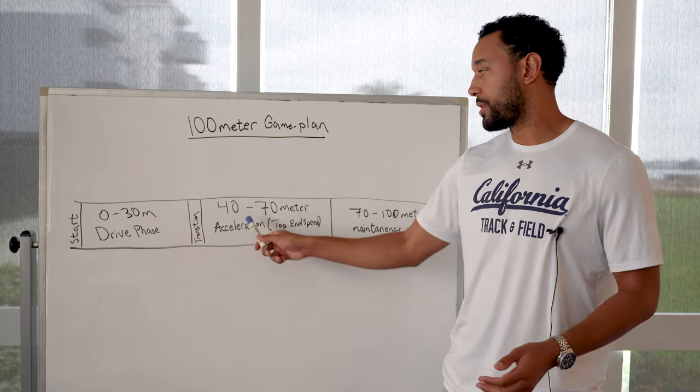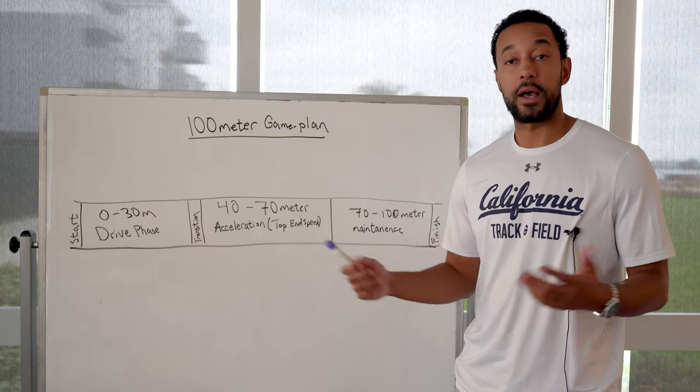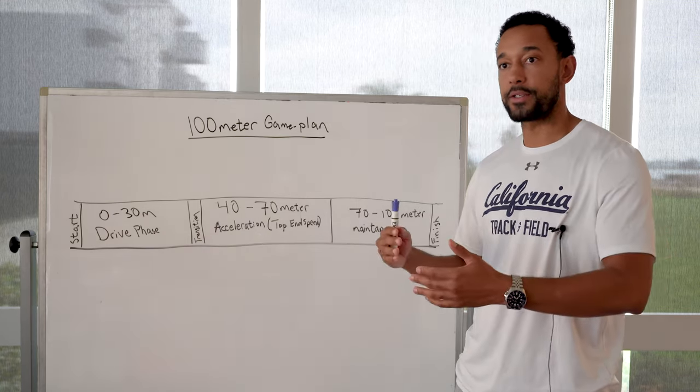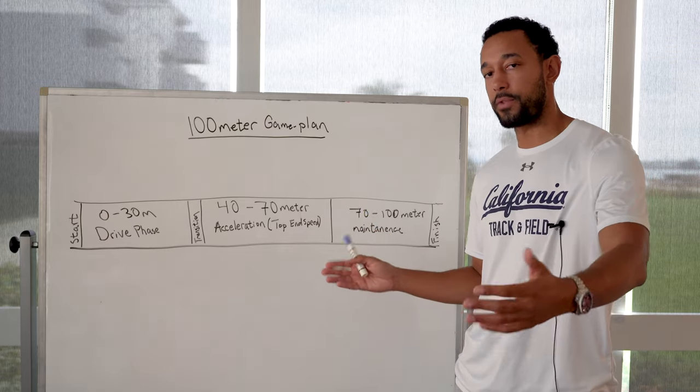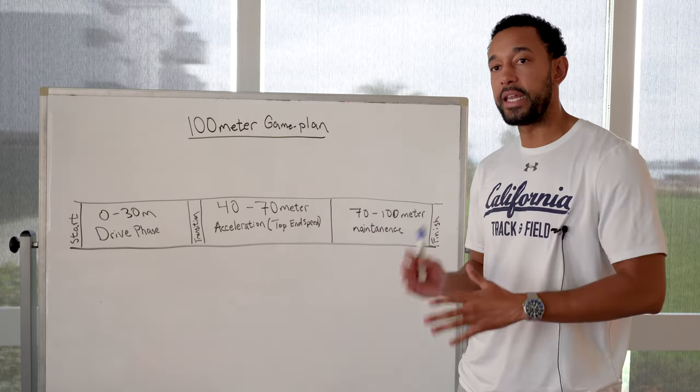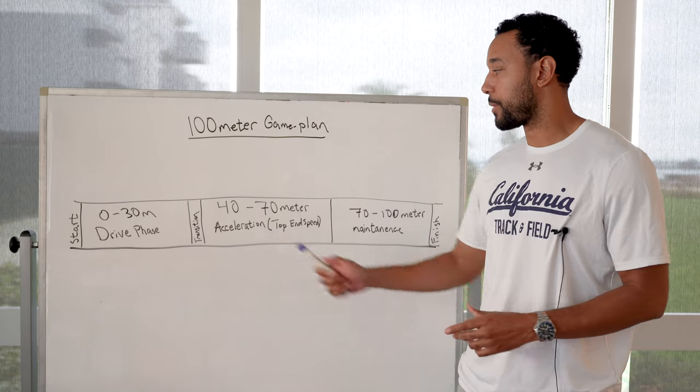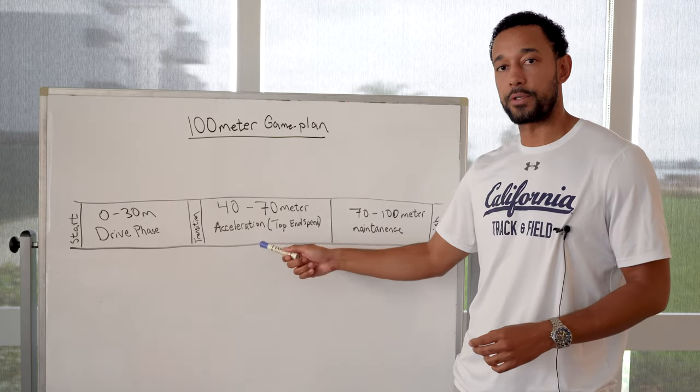So acceleration from 40 to 70 is going to be things like flying 30 meters where you get a running start. And then in between two cones, you have 30 meters where you really hit it. You really try to accelerate. It's going to be working a lot of turnover drills.